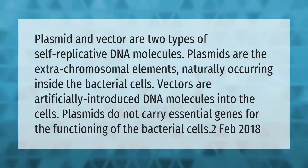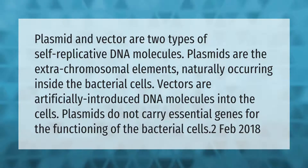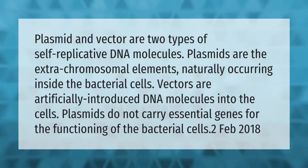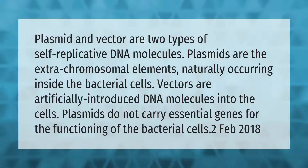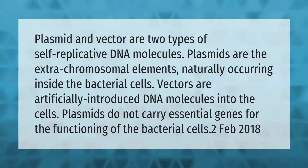Plasmid and vector are two types of self-replicative DNA molecules. Plasmids are the extra chromosomal elements naturally occurring inside the bacterial cells. Vectors are artificially introduced DNA molecules into the cells. Plasmids do not carry essential genes for the functioning of the bacterial cells.